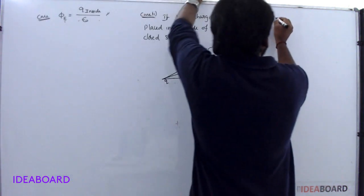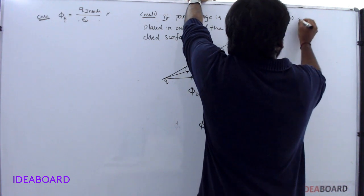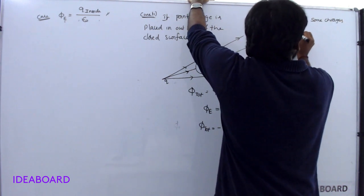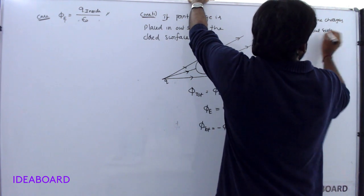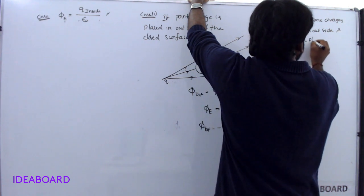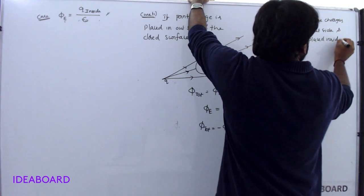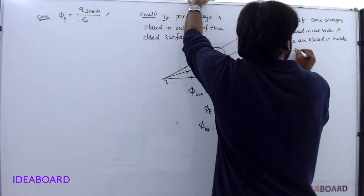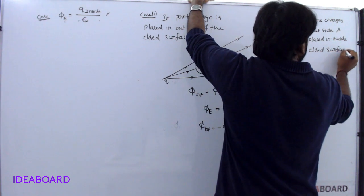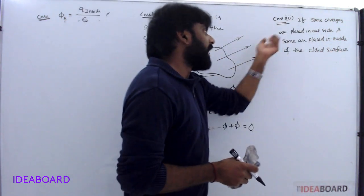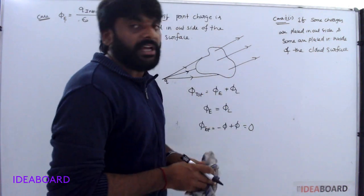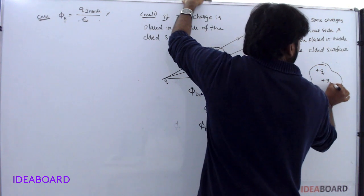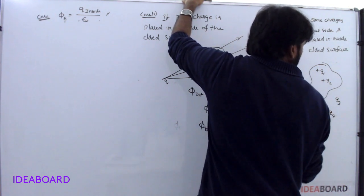In the third case, if some charges are placed outside and some are placed inside of the closed surface, consider a closed surface with charges q1, q2, q3, q4, q5.